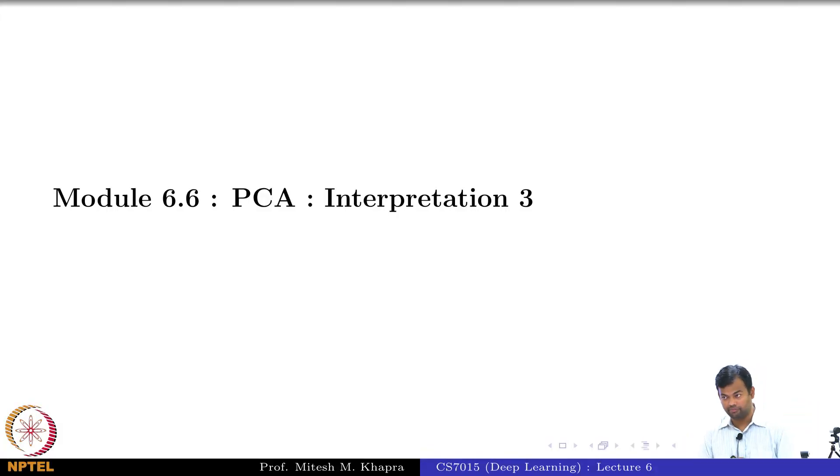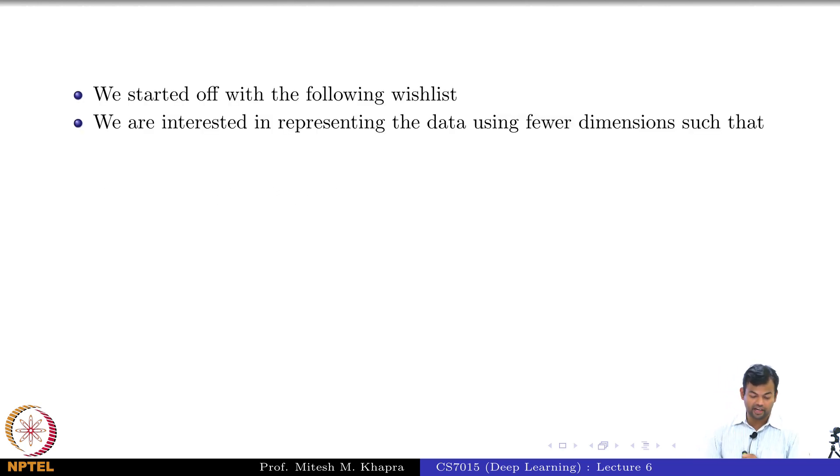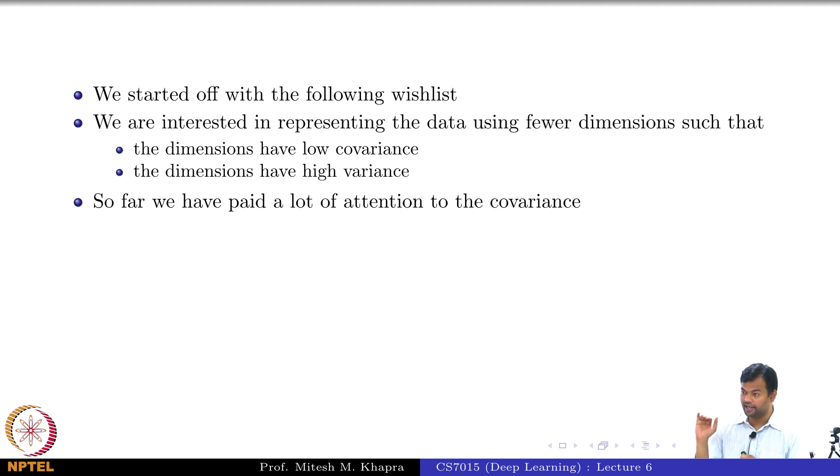And now we will go to the third interpretation where we will try to say something about the variance. We started off with the following wish list that we wanted low covariance and we wanted high variance. So far we have paid attention to the covariance because everything was revolving around this covariance matrix in both the solutions.